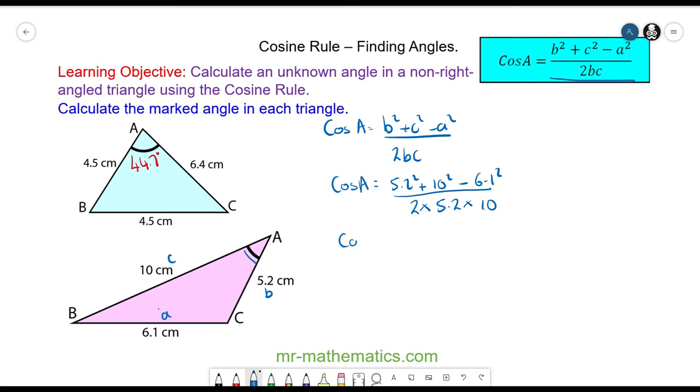So the cosine of angle A will be 89.83 divided by 104. So the cosine of angle A will be 0.864 and we can do the arc cos of both sides. So these will cancel. So angle A will be approximately 30.3 degrees.